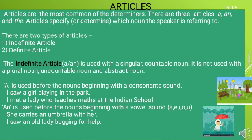'A' is used before a noun beginning with a consonant sound. For example: I saw a girl playing in the park; I met a lady who teaches maths at the Indian school. 'An' is used before a noun beginning with a vowel sound — A, E, I, O, U. For example: she carries an umbrella with her; I saw an old lady begging for help.